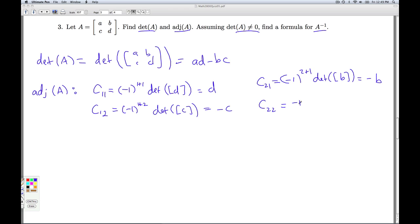And C2,2 is negative 1 to the 2 plus 2 times the determinant of what you get by deleting the second row, second column, and I'm going to get A. That simplifies then to 1 times A, which is A. So notice the plus or minus on the cofactors follows that alternating pattern that we mentioned before.